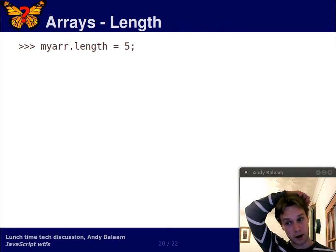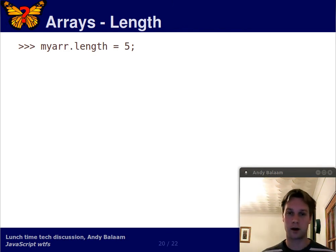So, this is the same variable we had in the previous slide, myArror. So, it had three things in it. Previously, its length was 3. I didn't show you that, but it was. So, let's set the length to 5.